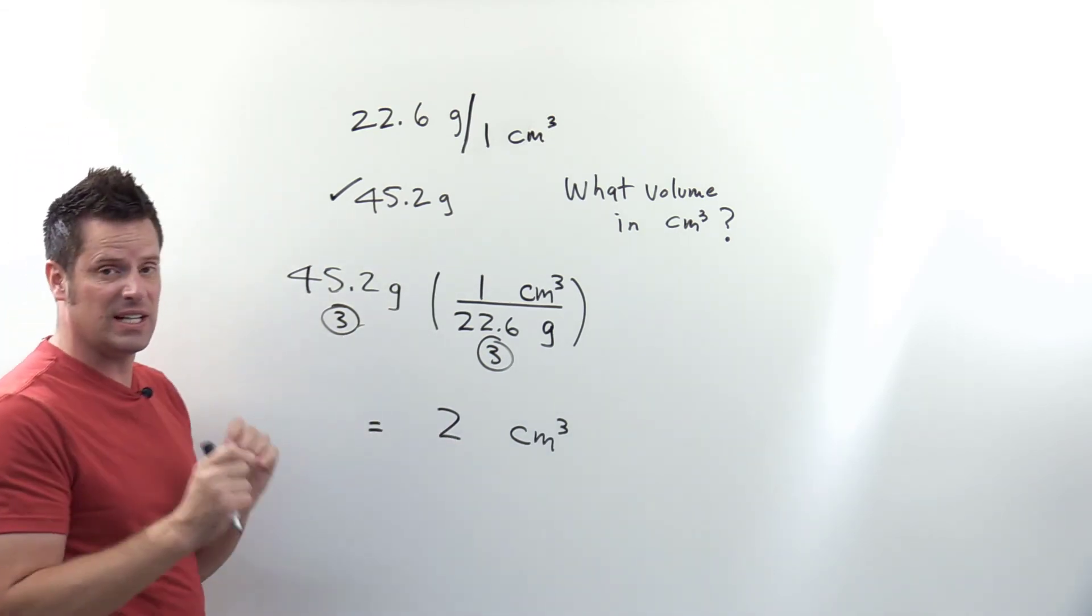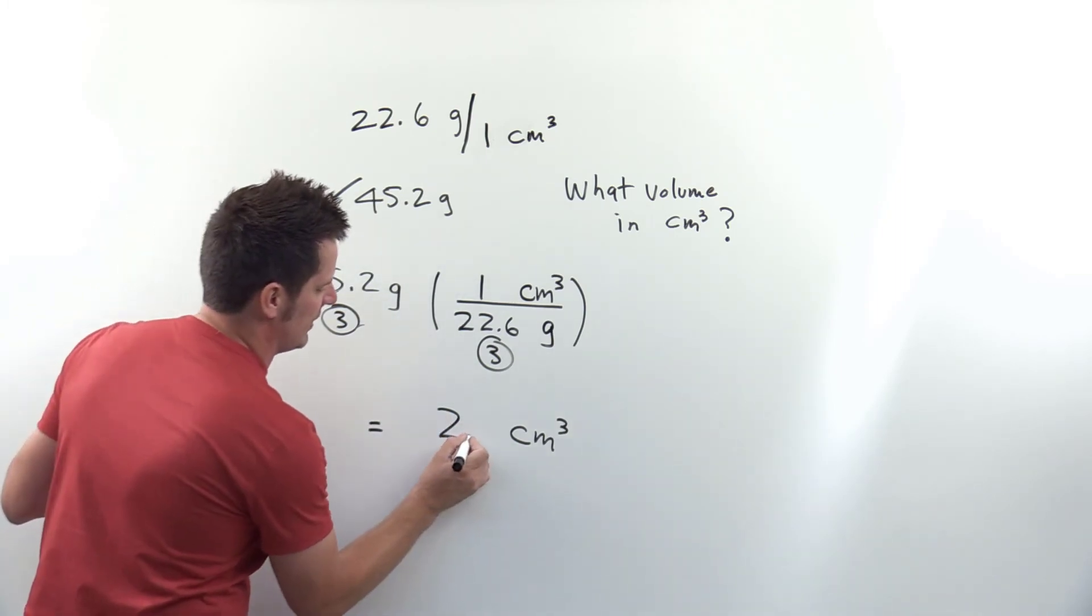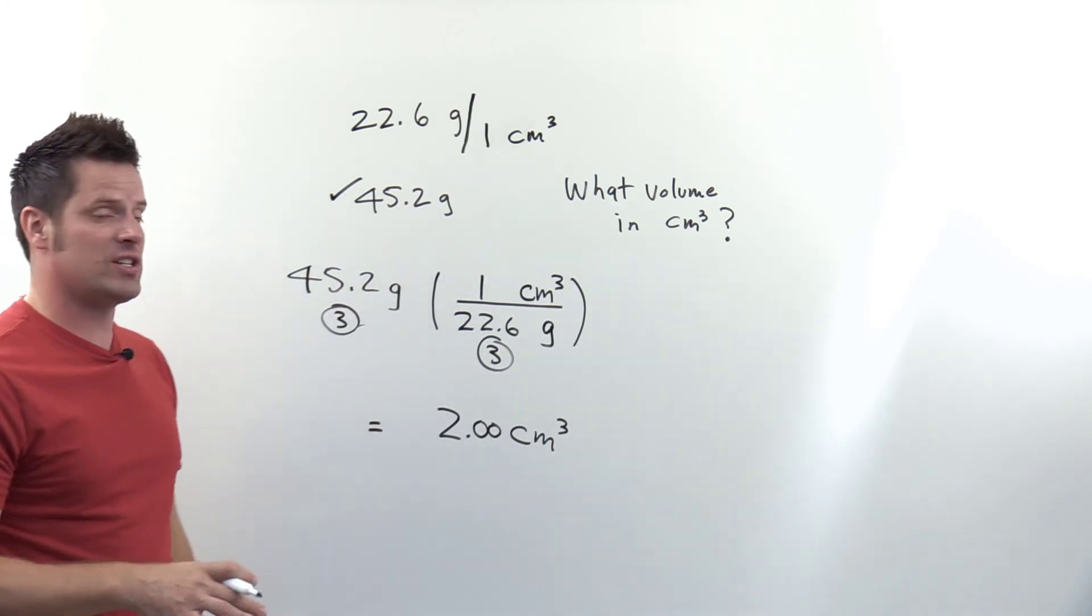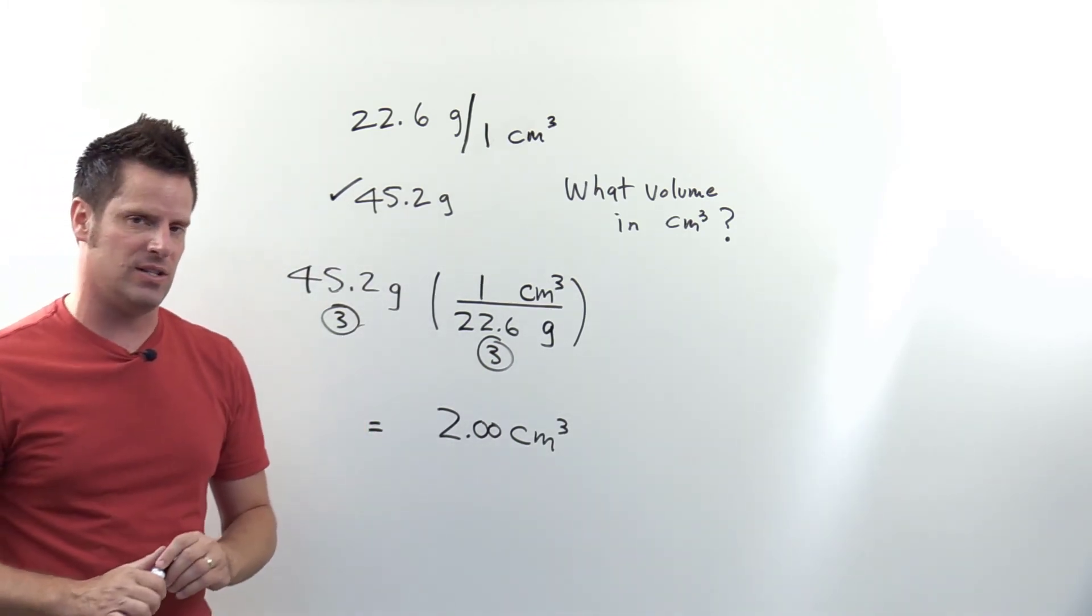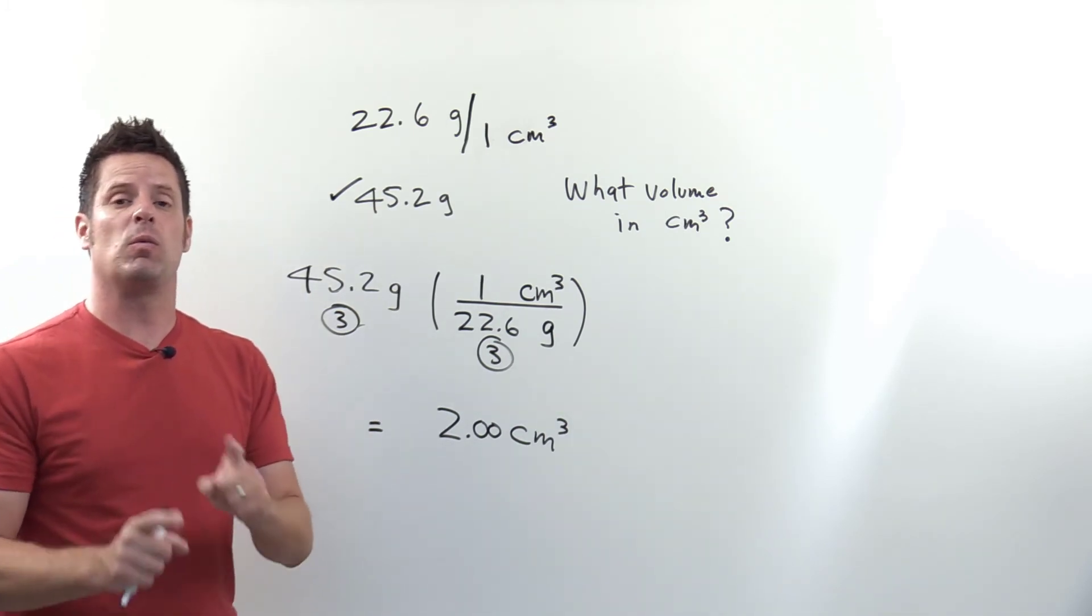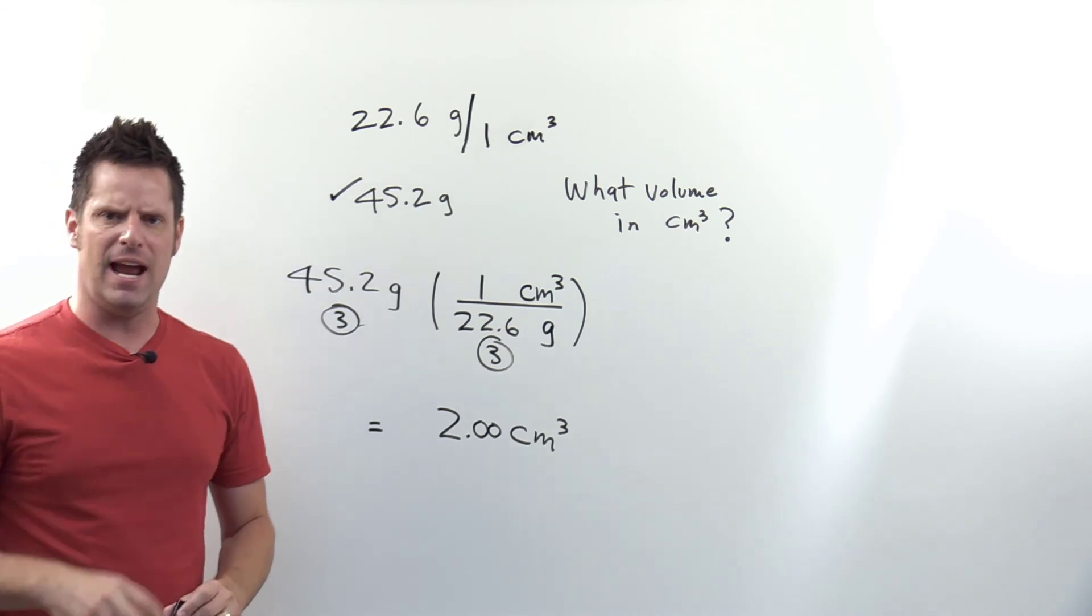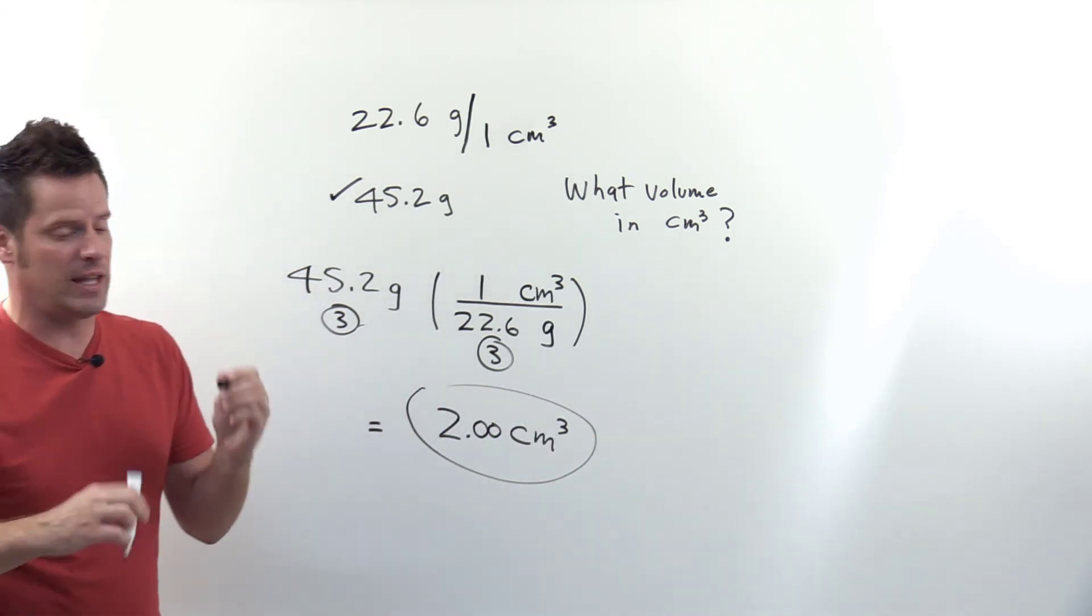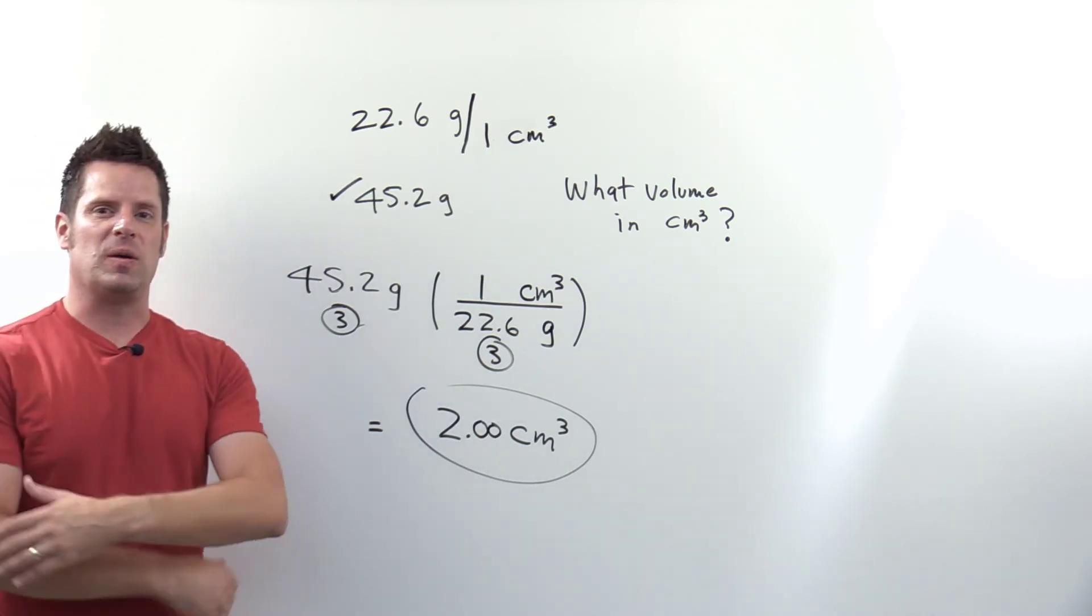With all of that said, I need to round my final answer to have three significant figures. Now my answer is exactly two. How do I rewrite that to have three significant figures? I just put two zeros to the right of the decimal. According to our sig fig rules, zeros that are to the right of a decimal actually do count as significant because they convey to the reader that your instrument was accurate enough to measure out to that many decimals without any error. So this is the final answer: 2.00 cubic centimeters. This hopefully illustrates clearly how we use density as an intermediary to interconvert between mass and volume.